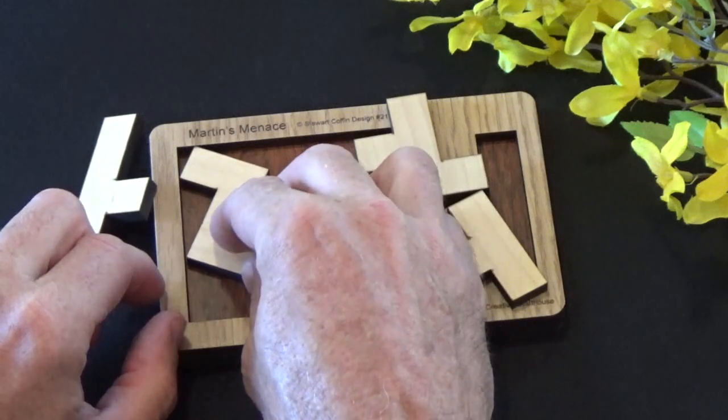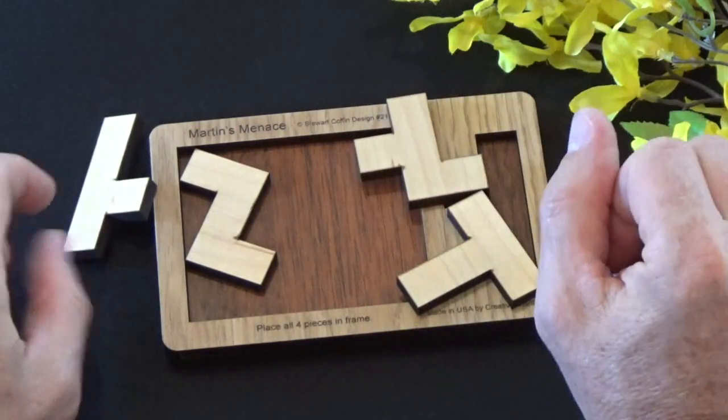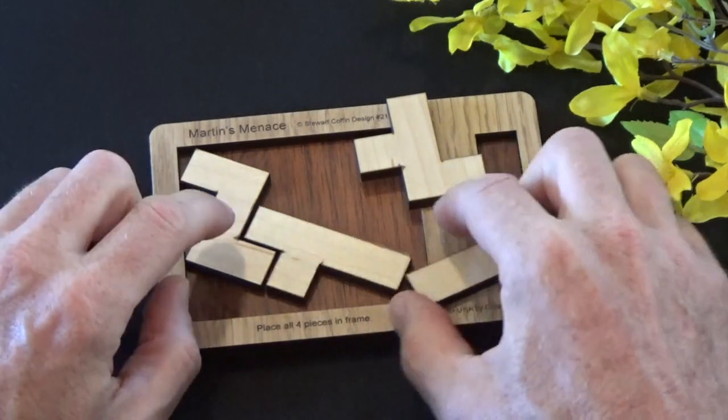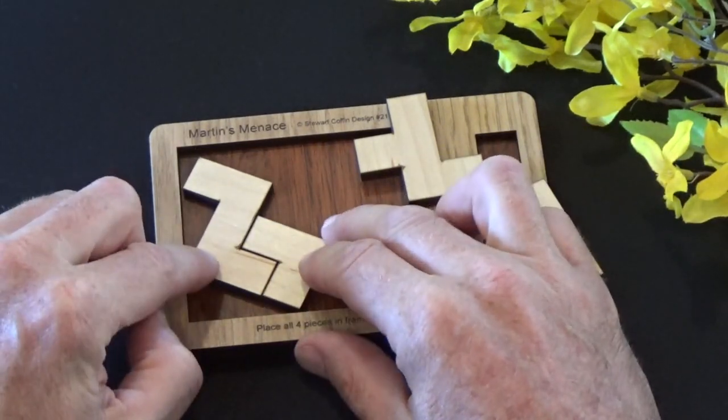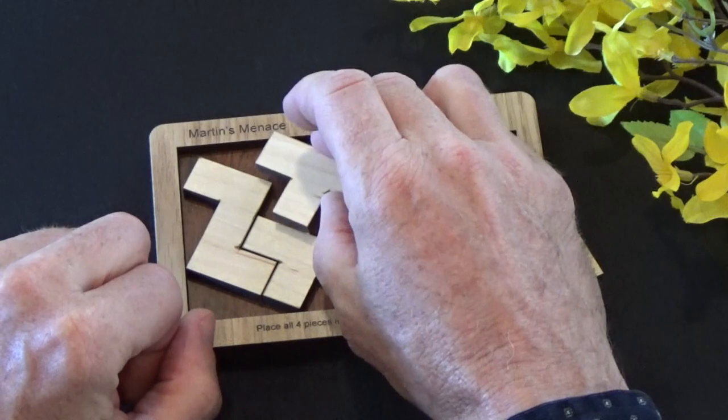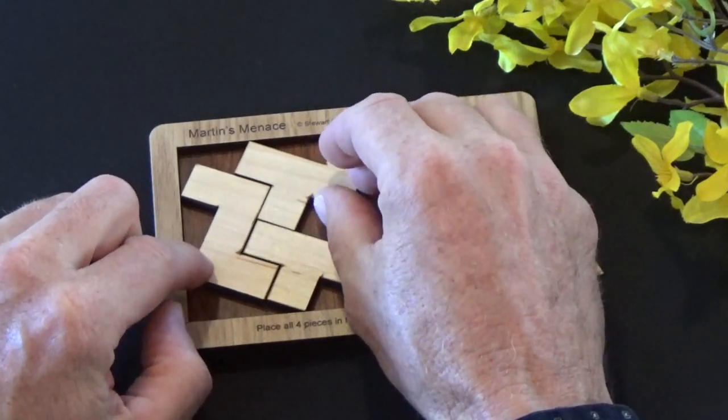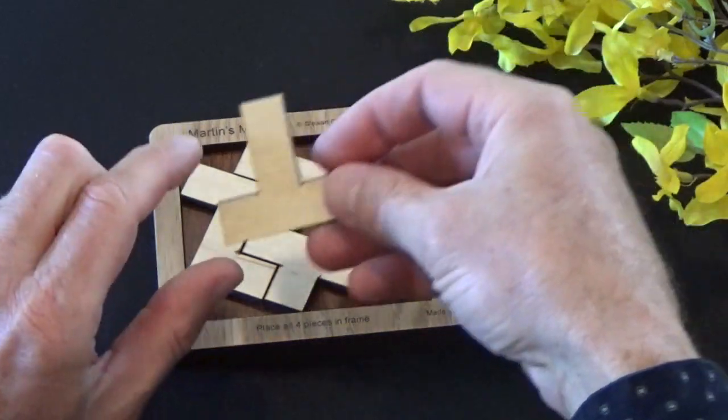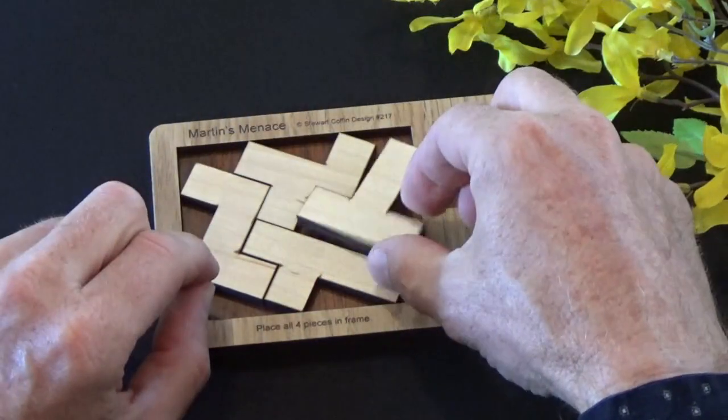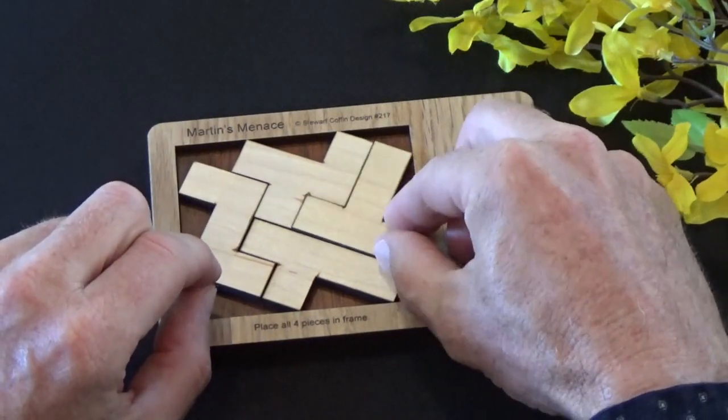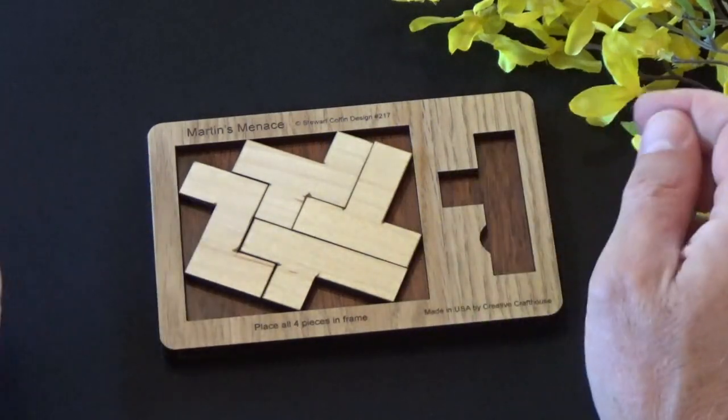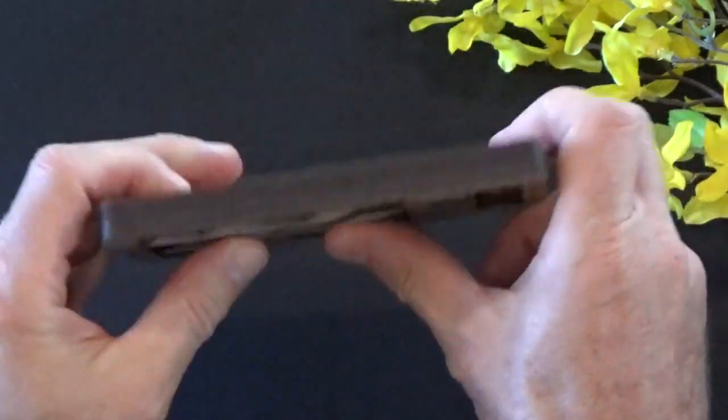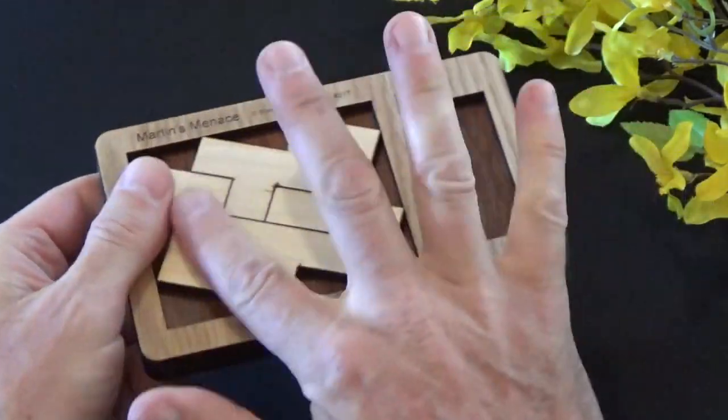This piece is going to go like that. This piece here goes like this. This piece here goes like that. And that last piece, the T shaped piece is going to lay in just like that. And there you have it. That is the solution to the Martin's Menace. See all the pieces fit in there.